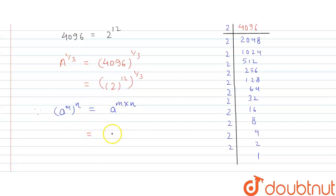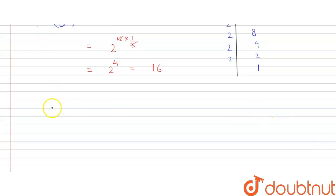So this will be equal to 2 raise to power 12 multiplied with 1 by 3. 3 and 12 cancel by 4. So this will be equal to 2 raise to power 4. Or we can say this is 16.